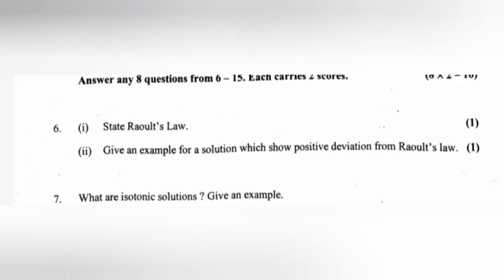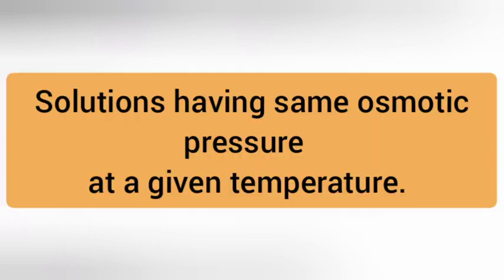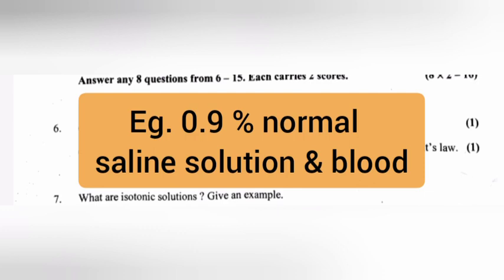Question 7: What are isotonic solutions? Give an example. Answer: Solutions having same osmotic pressure at a given temperature. Example: 0.9% normal saline solution and blood.